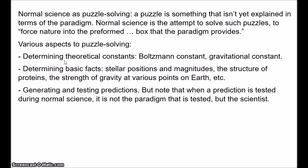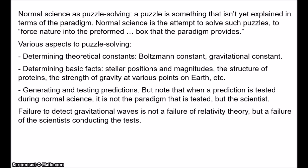An important part of normal science is generating and testing predictions. But it's crucial to note that, according to Kuhn, when a scientist tests predictions during normal science, it's not the paradigm that's tested, but the scientist. So, for example, general relativity predicts gravitational waves — essentially ripples in the curvature of space-time. What Kuhn would say is that if a scientist's experiments fail to detect gravitational waves, that will usually be considered not a failure of relativity theory, but instead a failure of the scientist conducting the tests. Gravitational waves exist; you just need to be clever enough to find them.